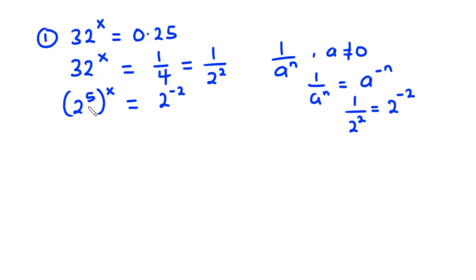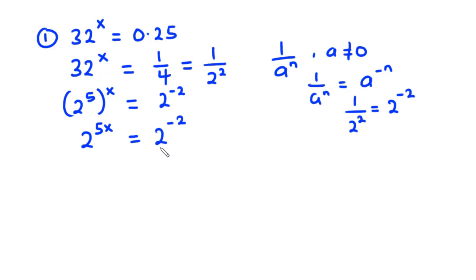Now we can multiply the exponents. So we have 2 exponent 5x equals 2 exponent negative 2. Now because we have common bases, we can compare their exponents. So we have 5x equals negative 2.